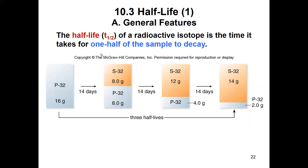For example, phosphorus-32 decays into sulfur-32 by beta emission, and we know that the half-life of phosphorus is 14 days. So after 14 days, if we had 16 grams of phosphorus-32, we know that after 14 days we will have only half of the 16 grams. So from 16 grams it goes down to 8 grams of phosphorus-32, and half of it — 8 grams — has been changed into sulfur-32.